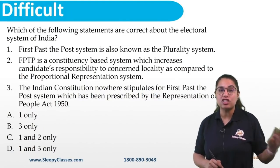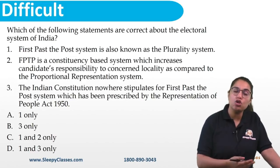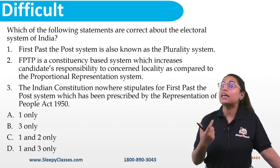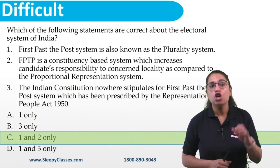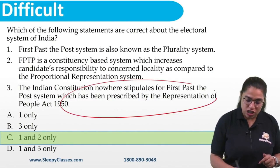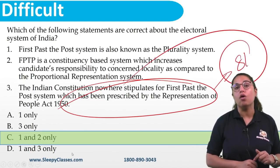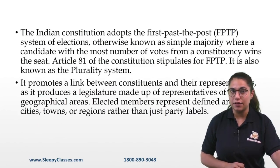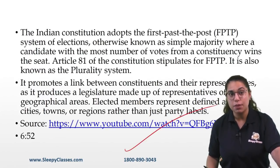Next is a slightly difficult conceptual question about First Past the Post (FPTP) system, involving plurality system and proportional representation concepts. The correct answer is C — one and two only. The third statement is wrong: the Indian Constitution does indirectly refer to the FPTP system in Article 81. The first two statements are absolutely correct. Review the FPTP discussion in the premix for details.